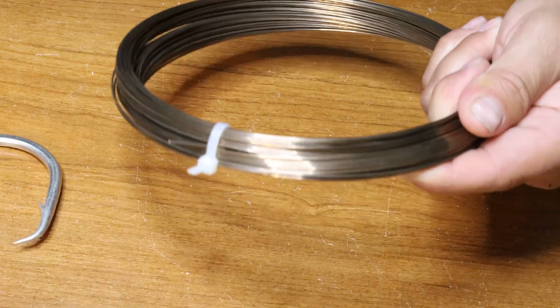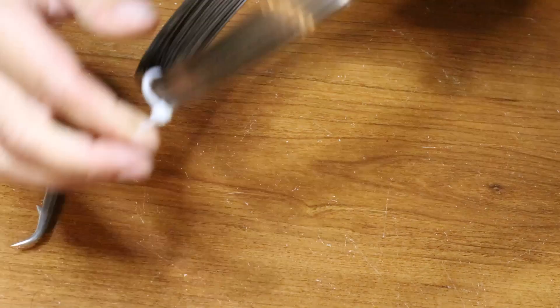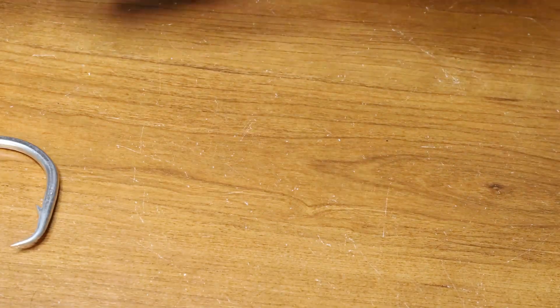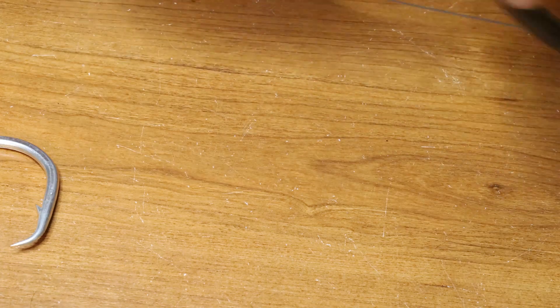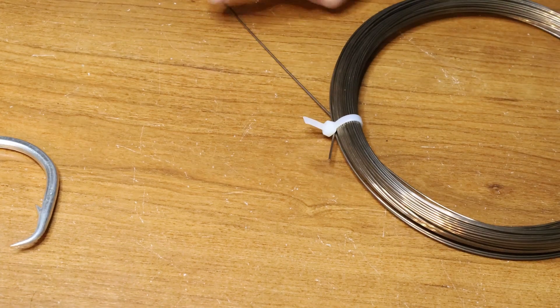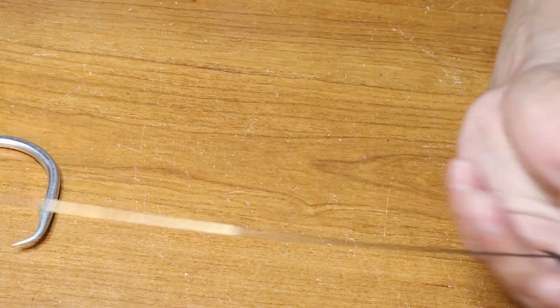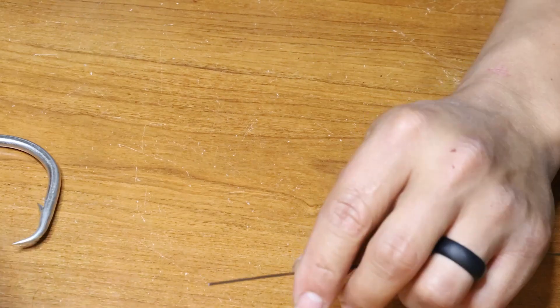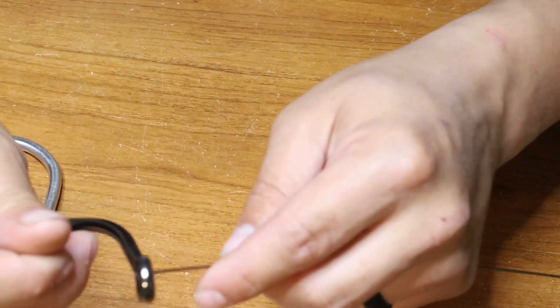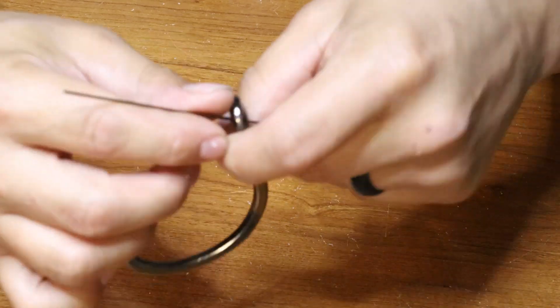So to do this haywire twist is fairly easy. You don't need that much wire, just for demonstration purposes. You got your number 19 wire and you got your hook. You'll come through the eye of the hook.